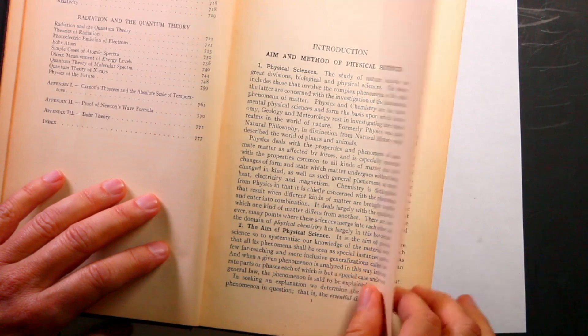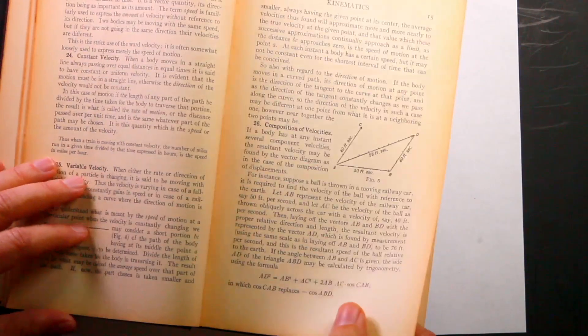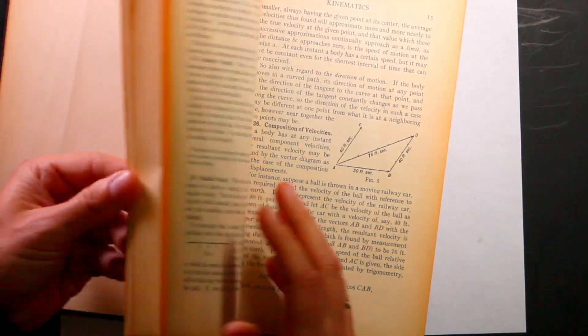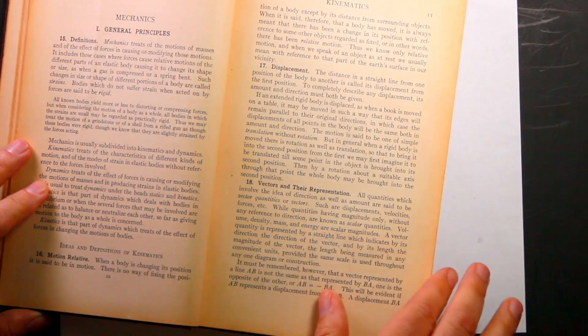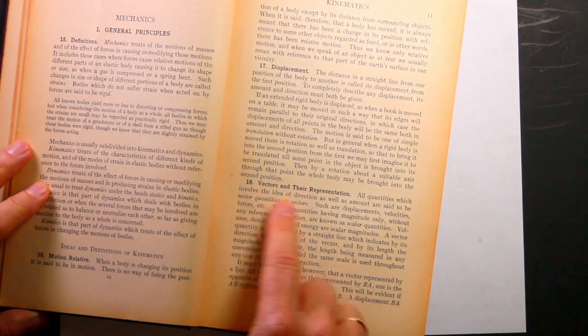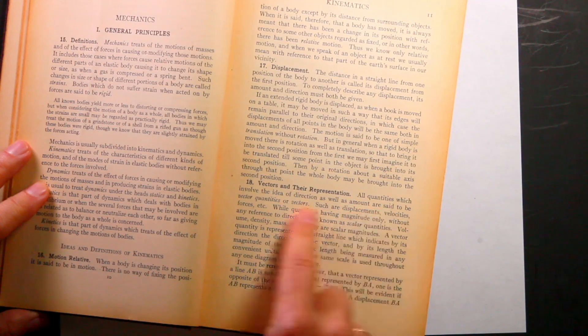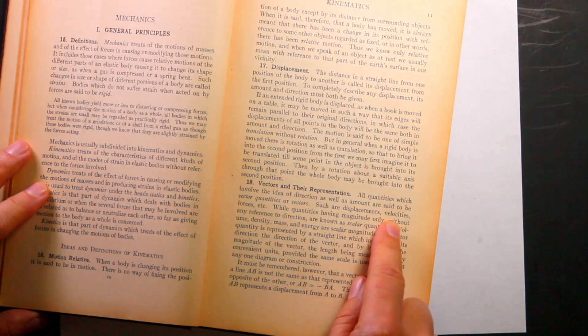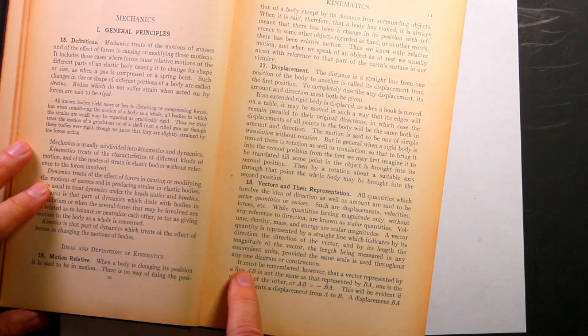So let's just talk about physical science and the aim of physical science. Let's just skip up here to something that we can look at. I did see something in here earlier. Yeah. Mechanics. Vectors. That's important, right? All quantities involve the idea of direction as well as amount are said to be vector quantities or vectors. Displacements are velocities, forces, etc.